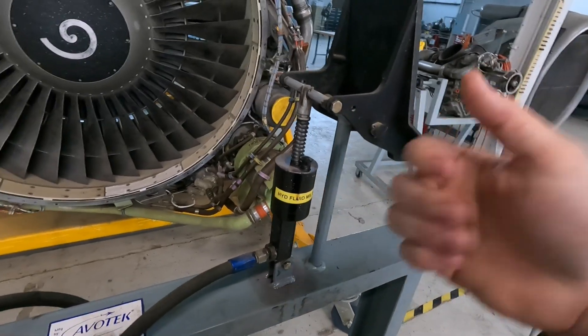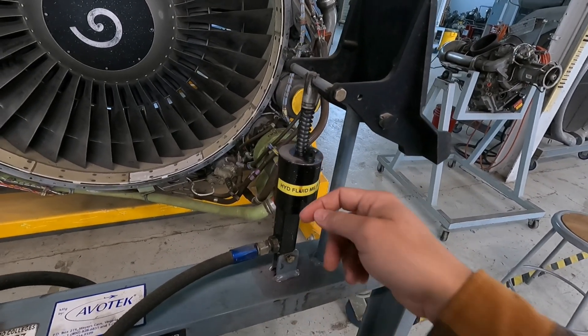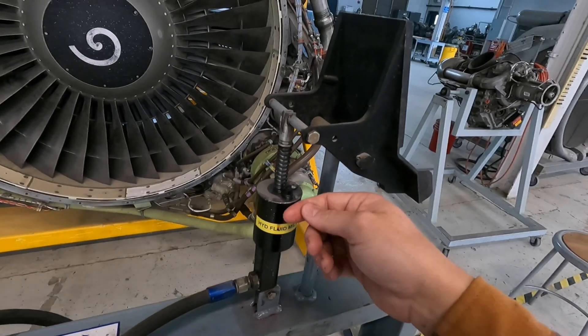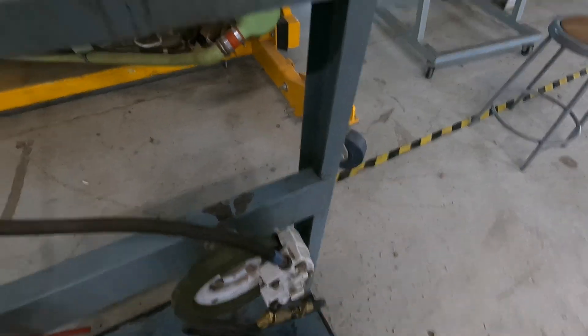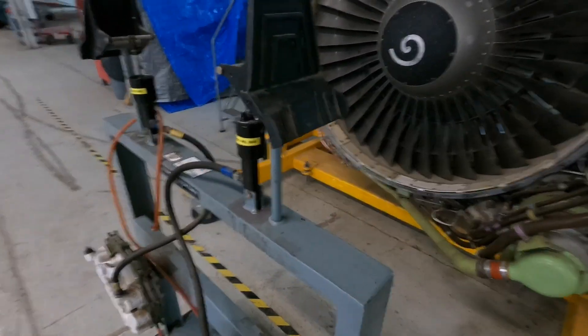So take a turkey baster, take a vacuum pump, whatever you need to do, and suck some fluid out of this reservoir so that it's not overflowing all over the place. But once the reservoir starts to overflow and is full, you shut the bleeder off, you pull this out, and then you're pretty much done. When you close that bleeder back off and you push on the brake pedal, I promise it will be solid.